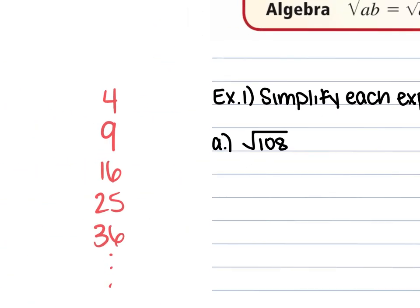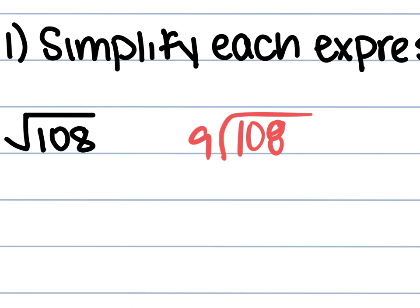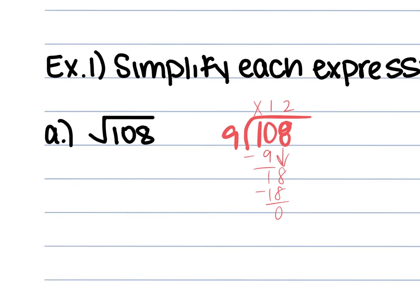So let's start with 108. Which of these perfect squares is going to be a factor of 108? Alicia says 9. Let's check: 108 divided by 9. How many times does 9 go into 10? Once. We subtract 9, get 1, bring down the 8, and get 12 with no remainder. So 9 and 12 give me 108. I'm going to rewrite this 108 as 9 times 12, so it's the square root of 9 times 12.